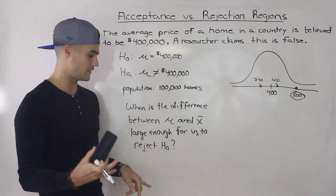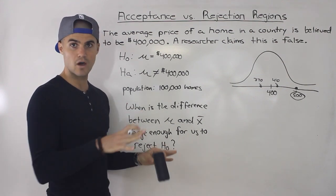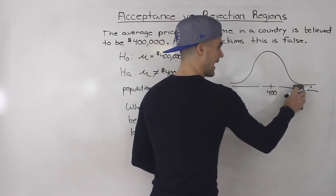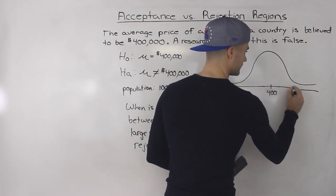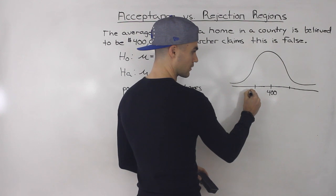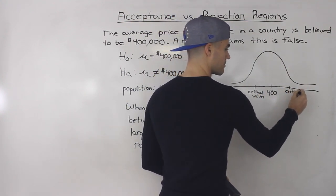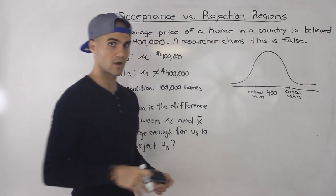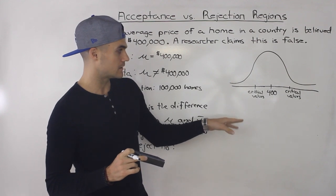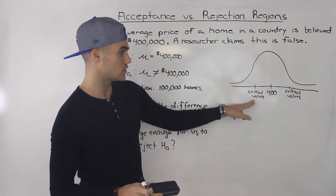When do we feel confident enough to reject the null hypothesis? Hypothesis testing takes away all that subjectivity and makes it objective. It gives us objective criteria — it gives us boundaries. These boundaries are called the critical values. We're not going to go into detail on how to calculate them in this video, but there is a way, and we'll cover that in future videos. Hypothesis testing takes all factors into account, like sample size, and gives you critical values.